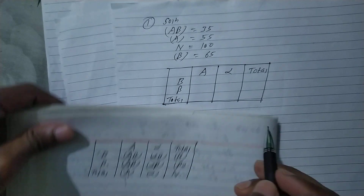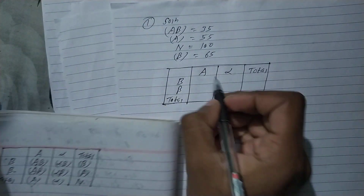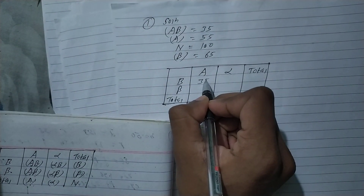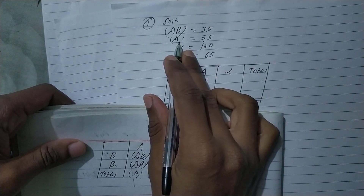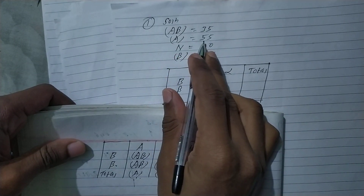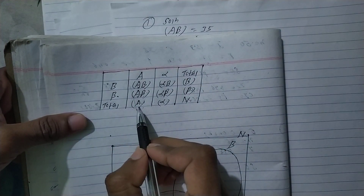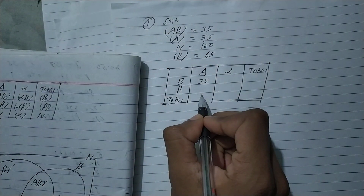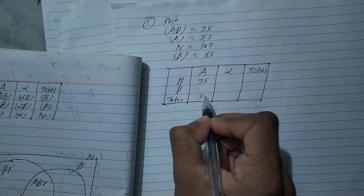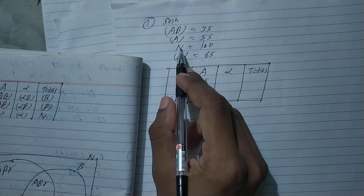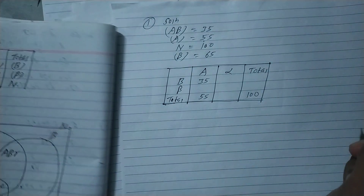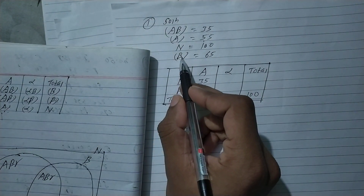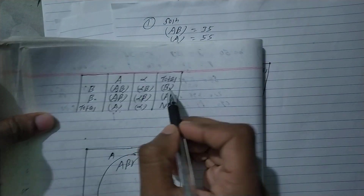So A B is 35. A is 55. Now, A plus alpha — how much is N? N is 100. Now B — so A plus alpha N is 100.